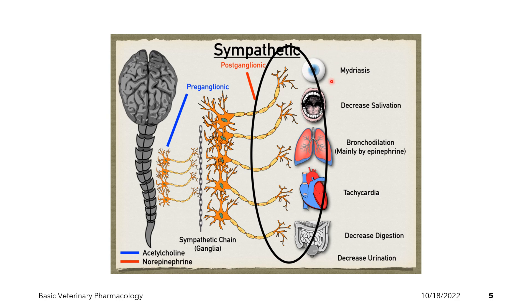In terms of pupillary dilation, there is mydriasis because you need to see better to be able to run away, so there is dilation of the pupil. During these times, digestion is down-regulated — there is a decrease in digestion and also a decrease in urination.